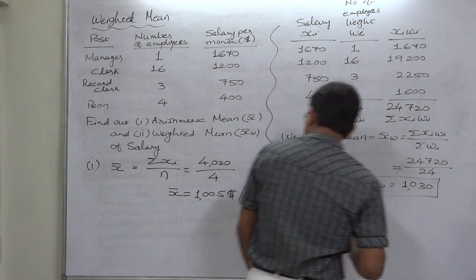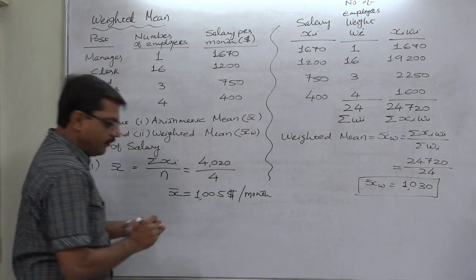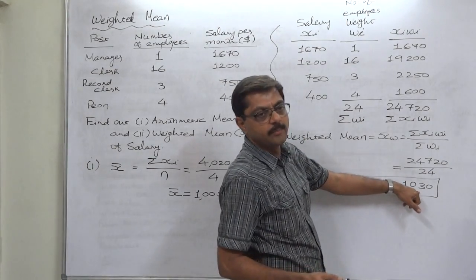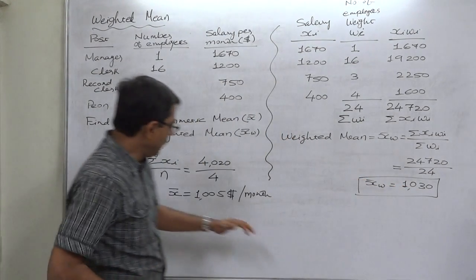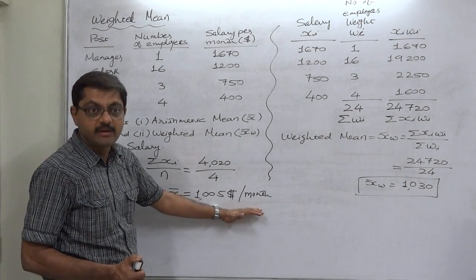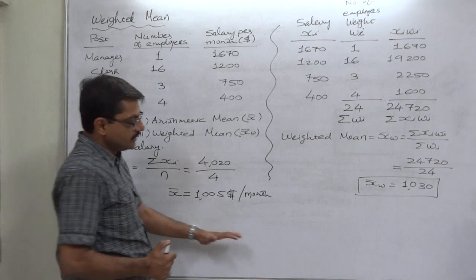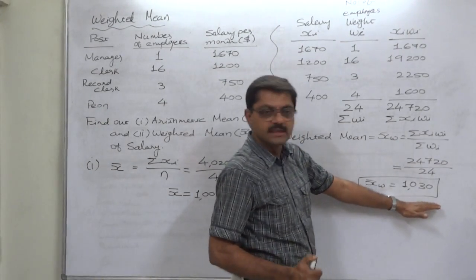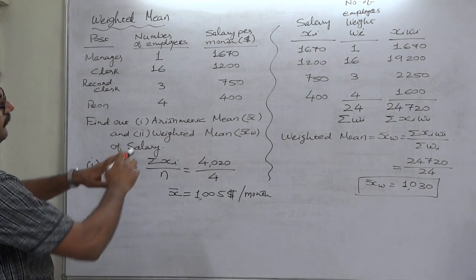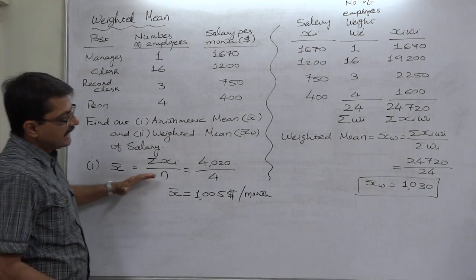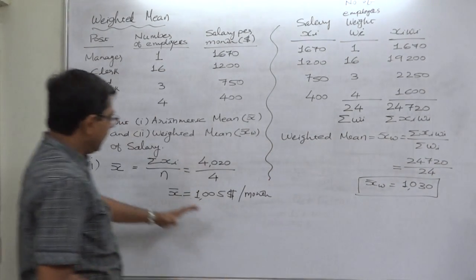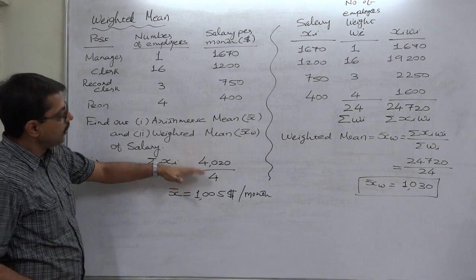24,720 divided by 24, so the weighted mean is 1030. The interpretation is average salary per person paid is 1030 rupees per month. The amount 1005 rupees per month is not the correct amount of average salary per head. Average salary per head is actually 1030. So this is the difference between arithmetic mean and the weighted mean.